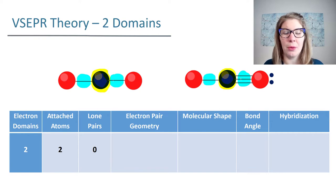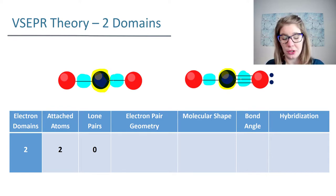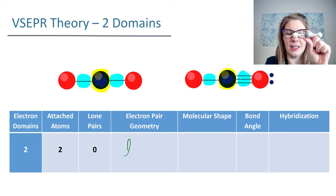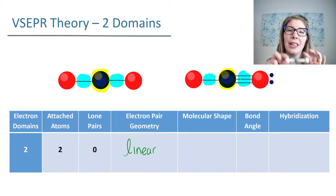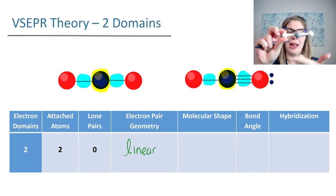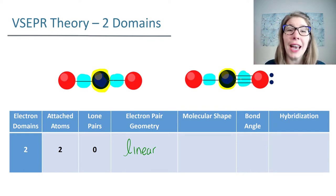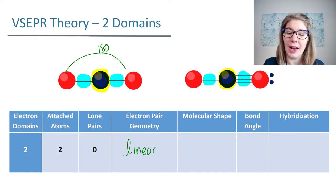These two examples are going to have the same electron pair geometry. Electron pair geometry looks at where the electron domains are with respect to one another. In this case they're opposite one another, making a line — so the geometry is linear. If we take a circle of 360 degrees and chop it in half, we get 180 degrees. So the bond angle for a linear structure is 180 degrees.